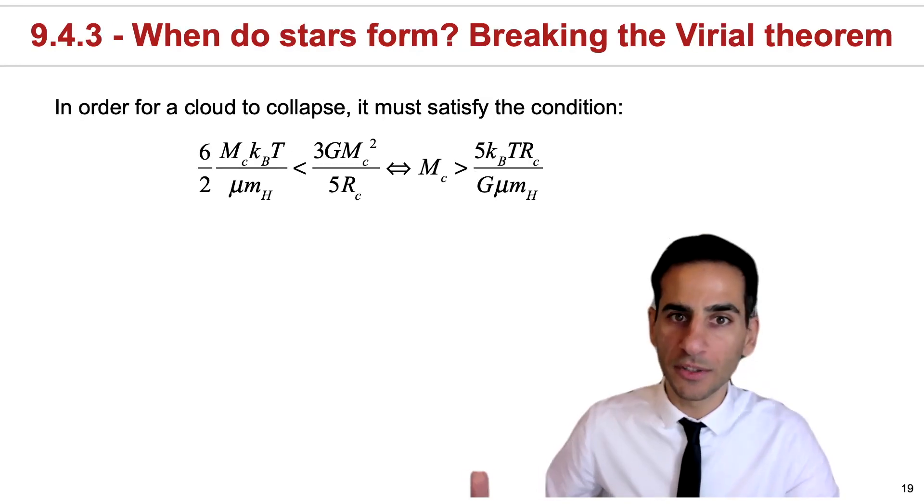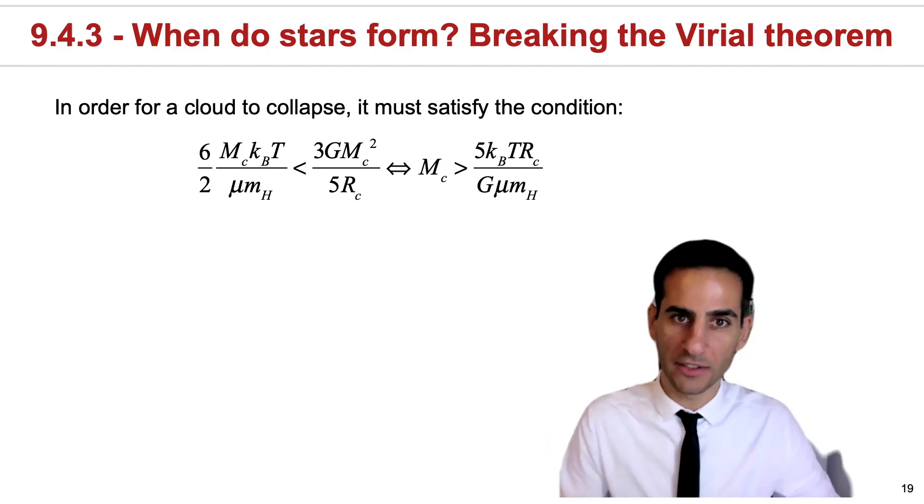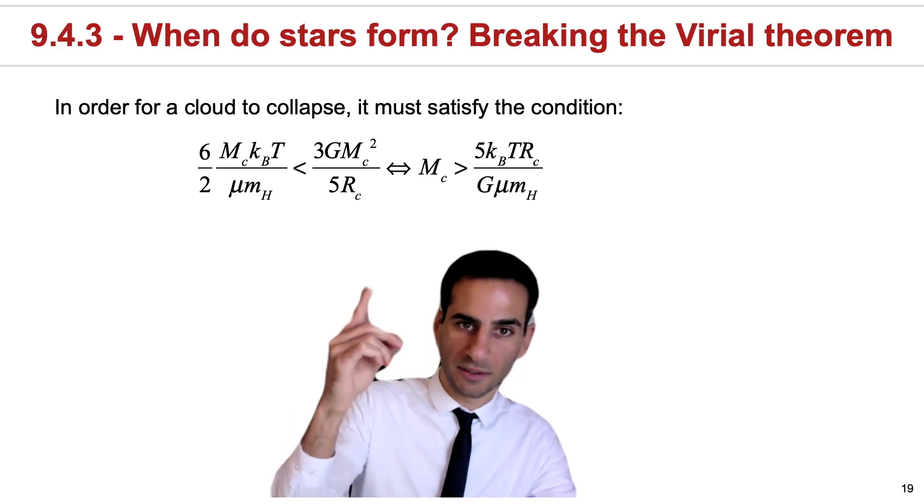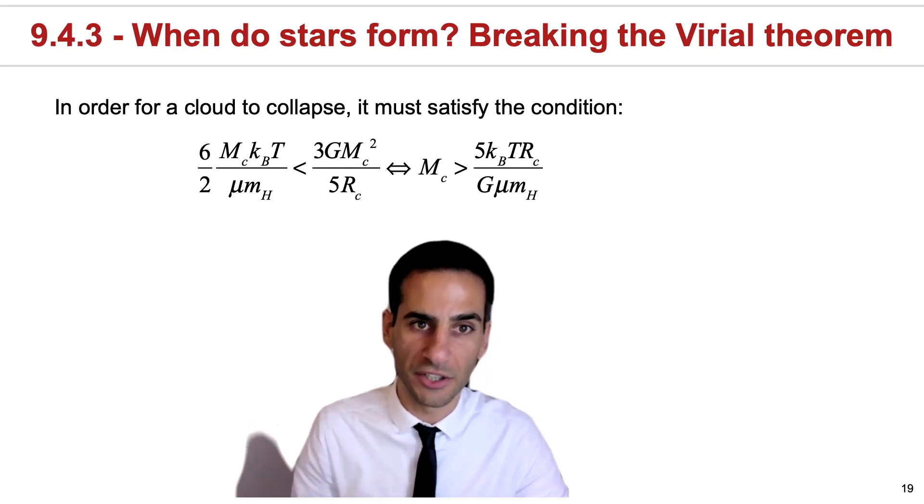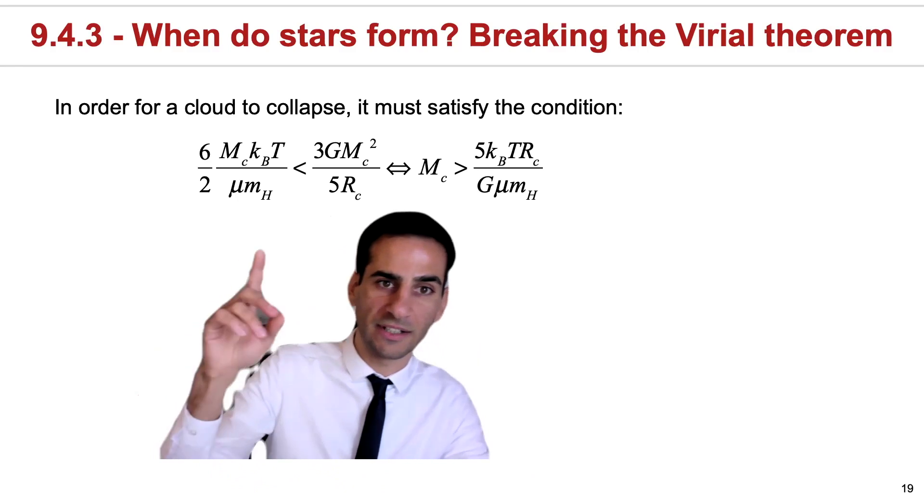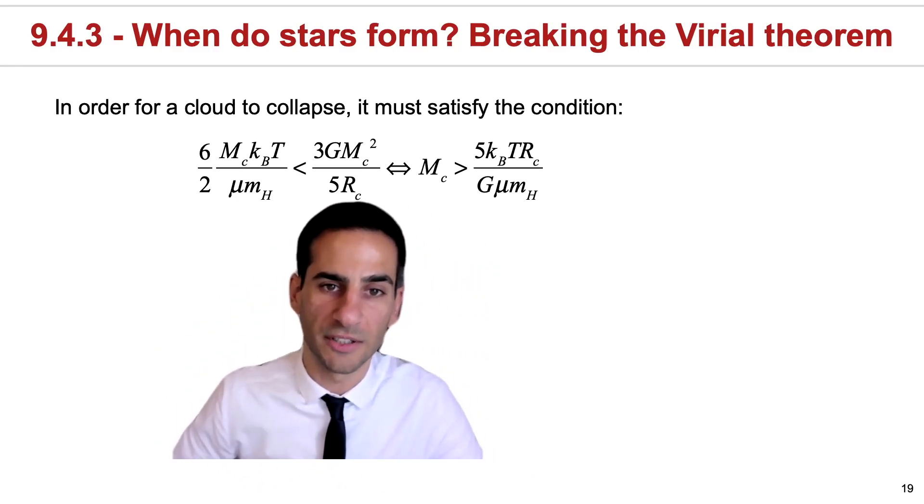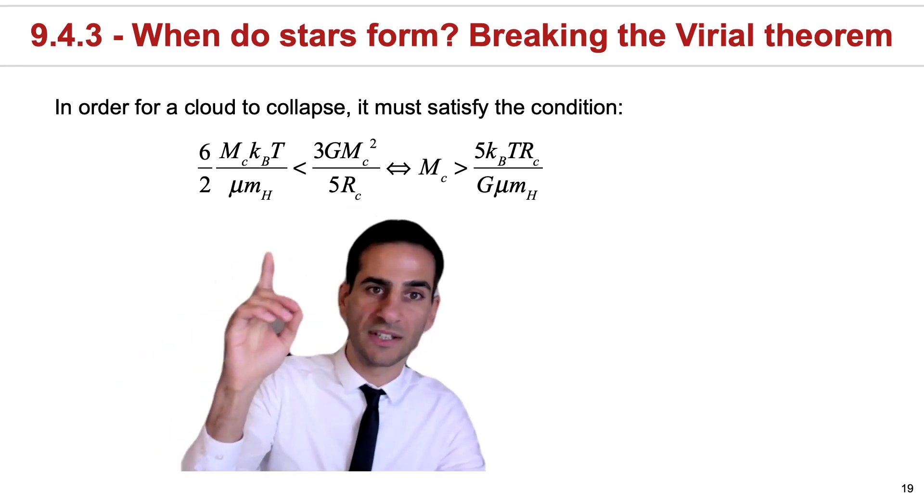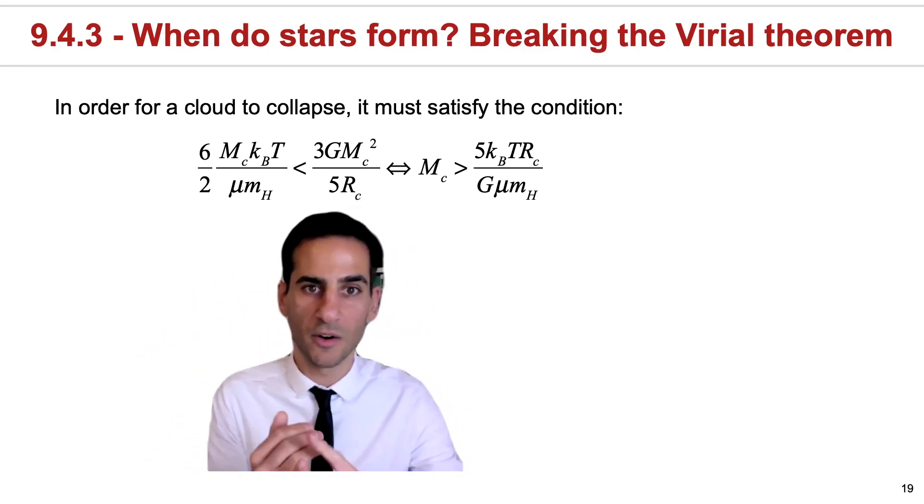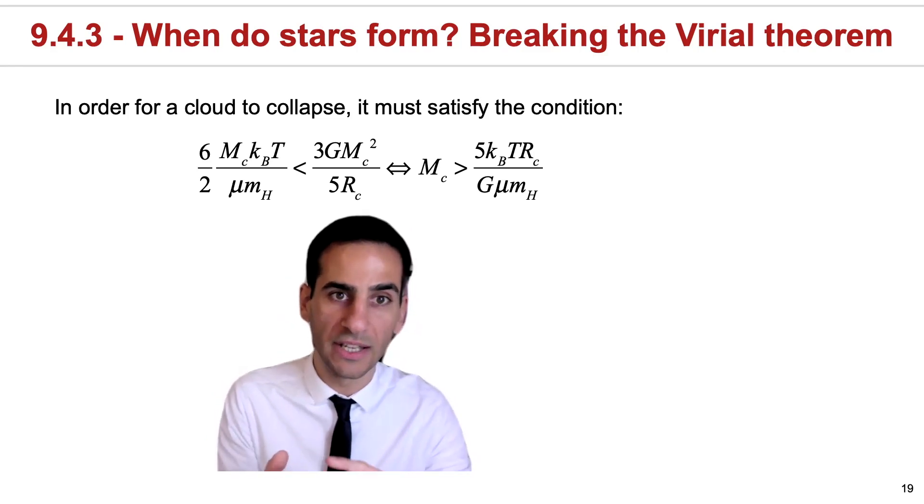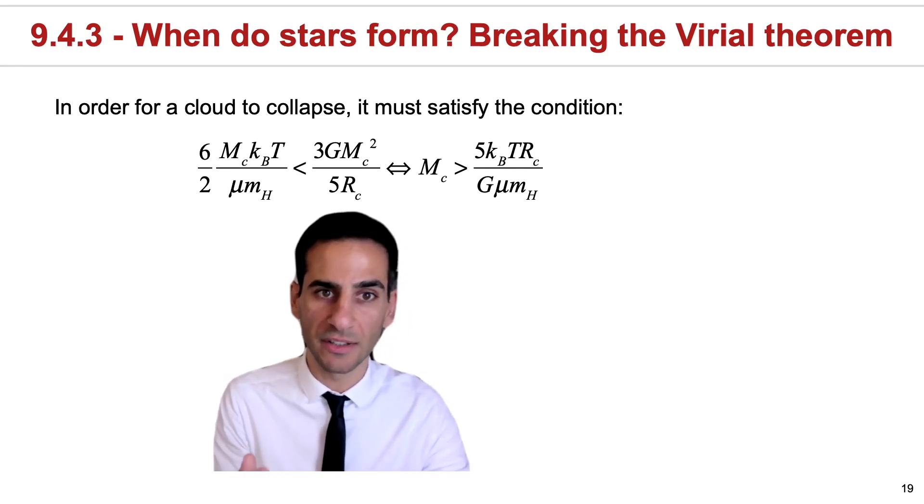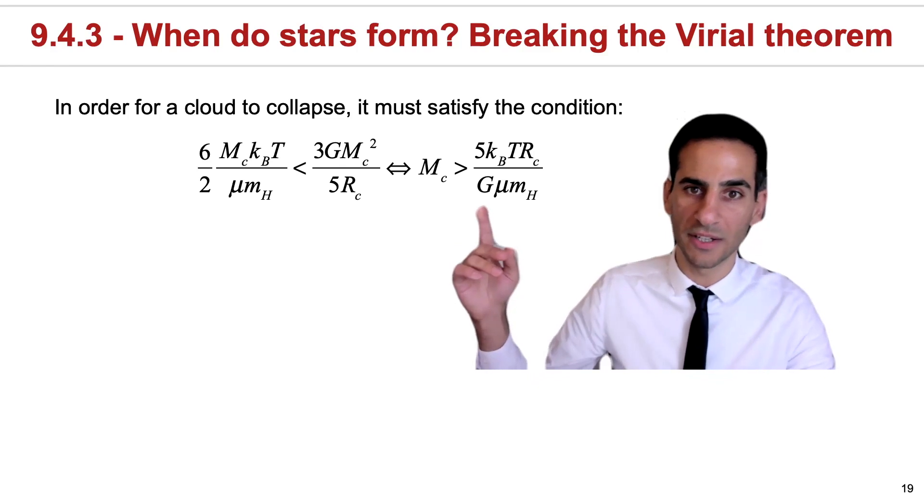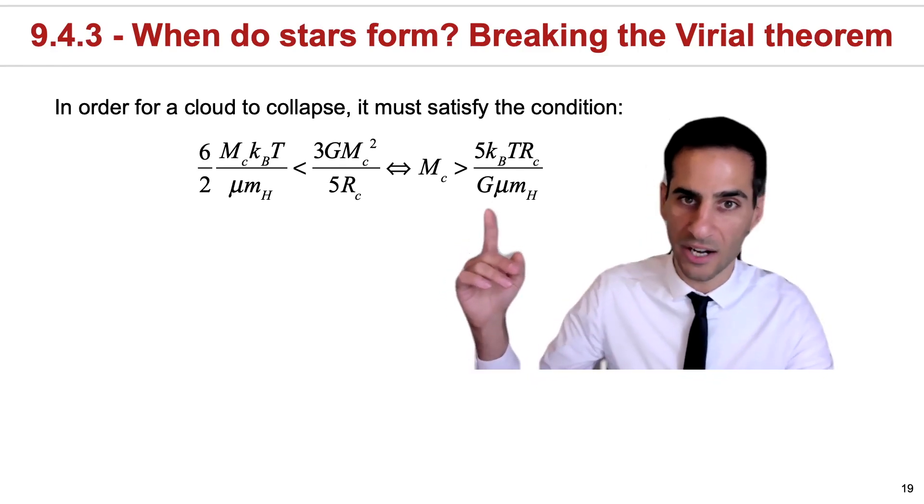If we want a cloud to collapse, then we can go back to the Virial theorem, and what we wrote before is that the gravitational potential energy divided by 2 would have to be larger than the kinetic energy. We already derived an expression for the kinetic energy and also for the gravitational potential energy. And it means that we can translate this in terms of physical properties that depend on the radius of the cloud, the mass of the cloud, and also what the cloud is made of, and there's also a temperature dependence. A useful thing you can do is actually solve for the mass of the cloud, and keeping the conditions allows you to realize that for a cloud to collapse, it needs to have a mass that is higher than this.